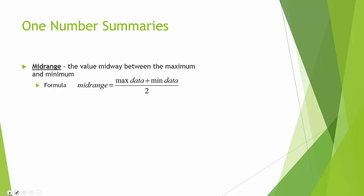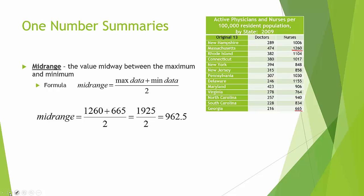Let's try the midrange with our data set. The maximum value is 1260, and the minimum value is 665. To find the midrange, I take these two and add them together and divide by 2. Like the mean, I have to do the addition on top first, then the division. I get a number with .5, and that's okay — that is one decimal beyond our data so we keep it. The answer is 962.5 nurses per 100,000 residents as the midrange. There is no symbol for midrange, so we only need notation for mean and median.